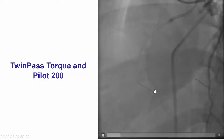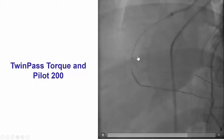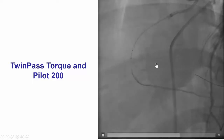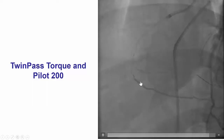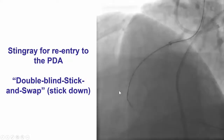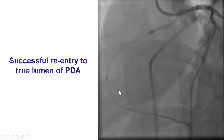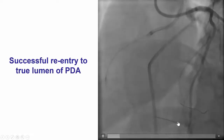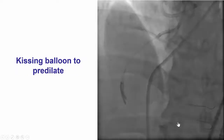To re-enter into the PDA, we used a Twin Pass Torque microcatheter, which is a very torqueable dual lumen microcatheter. We were able to advance a Pilot 200 wire subintimally into the PDA. We used a Stingray to re-enter, and once again, the double blind stick and swap technique — sticking on both sides of the Stingray balloon. Much easier than the posterolateral, we were able to advance a Pilot 200 all the way into the PDA.